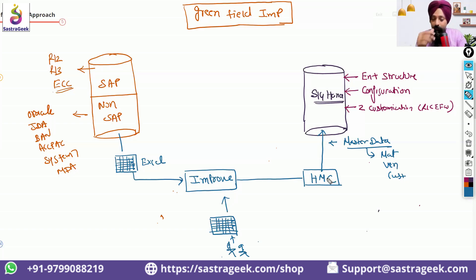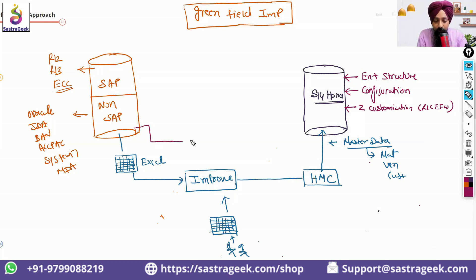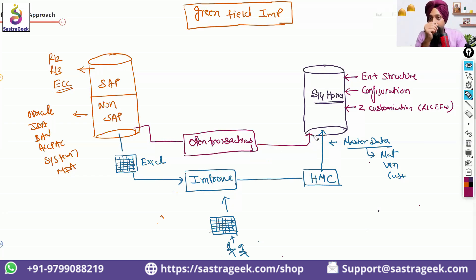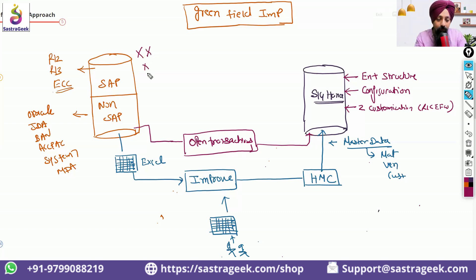For data not available in the legacy system, Excel templates will be manually filled by end users, validated, and then uploaded to HANA Migration Cockpit into S4 HANA. Using the same approach, we would also be bringing open transactions — open purchase orders, open sales orders, and open GL balances into S4 HANA.